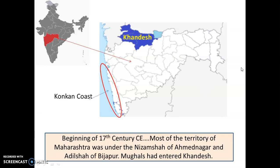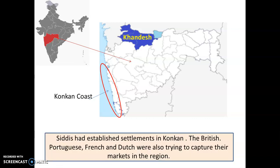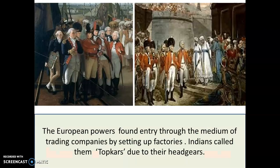This is the Konkan coast — even Versova comes in the Konkan coast. The Konkan coast was ruled over by the Siddhis, who had come from Africa. The British, the Portuguese, the French, and the Dutch were other foreign powers who had landed in our land and were trying to capture markets so that they could sell their goods in our country. They also looked for raw materials which they could take to their own countries.